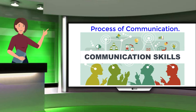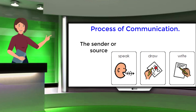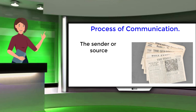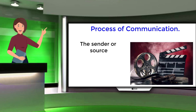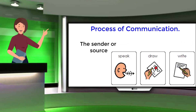The first element is the sender. The sender or source may be an individual who may speak, write, draw, or do gesturing — or a communication organization, i.e. a newspaper, or a publishing house, or a TV channel. The sender may use oral, written, or graphic signs or symbols to convey the message. Communication skills, attitude, and knowledge of the content of the sender have an impact on the effectiveness of the communication.